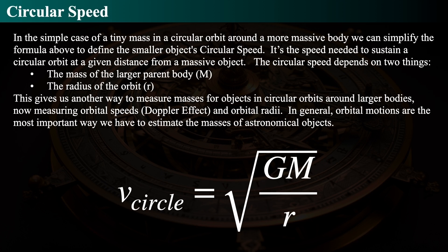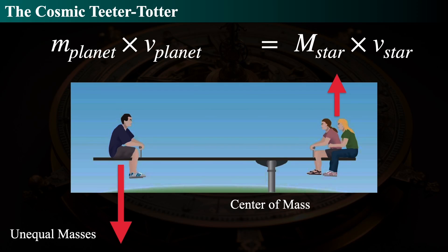Remember that image from the European Southern Observatory showing the radial velocity varying like a sine curve — that's exactly what we should expect. Now, the planet doesn't actually orbit the center of the star; it orbits the center of mass of the star-planet system. The star also orbits that center of mass. So both the star and the planet orbit that common balance point between them.